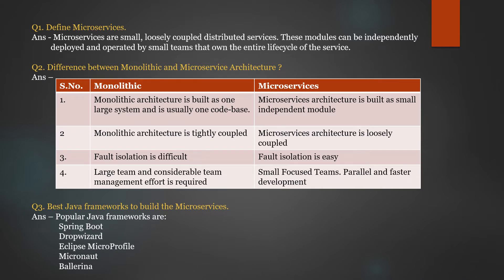First question: define microservices. Microservices are small, loosely coupled, distributed services which can be independently deployed, and you can have separate teams working on them. They can be developed in different programming languages and you can have parallel development for these services. They are independent, small deployable components which can be domain-driven APIs having their own scope or bounded context areas.